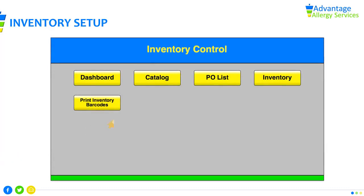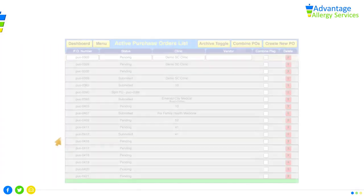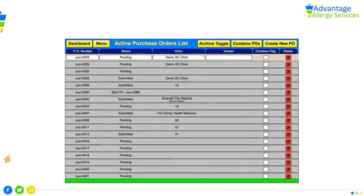Tap on the purchase order list tab to go to an existing or new purchase order or request. Here is an example of tracking your order request and the steps in the delivery process.